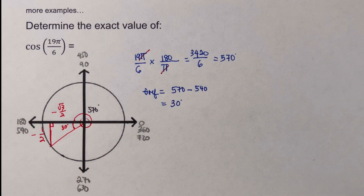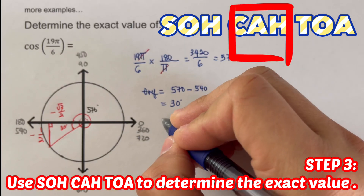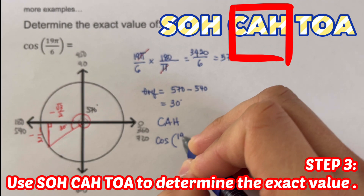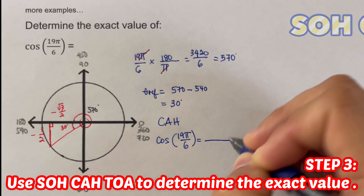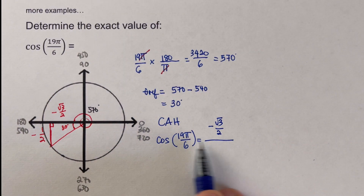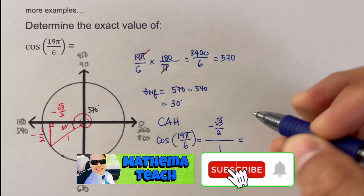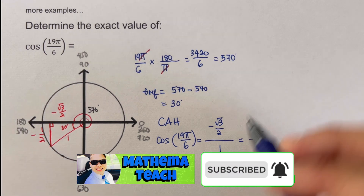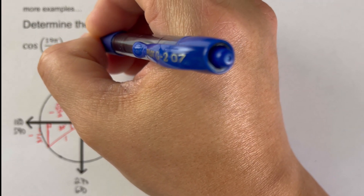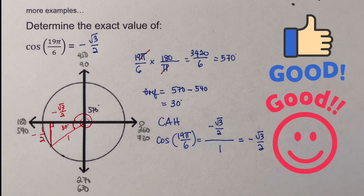The third step is to use SOH-CAH-TOA. Since this is cosine, we use CAH: adjacent over hypotenuse. Cosine of 19π/6 equals −√3/2 divided by 1. In the unit circle the hypotenuse is always 1, so this is just −√3/2. The exact value of cosine 19π/6 is −√3/2. Did you get the same answer? Good.